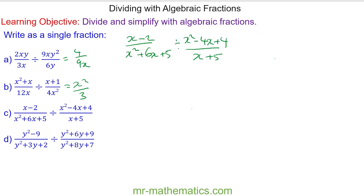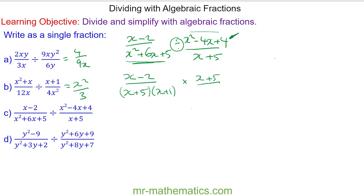For question c, we factorize the denominator. We have x minus 2 over x plus 5 and x plus 1. We change the divide to times and find the reciprocal of the other fraction. Factorizing gives x minus 2 lots of x minus 2. We cross-simplify x plus 5 with x plus 5, and x minus 2 with x minus 2, leaving 1 over x plus 1 multiplied by x minus 2.